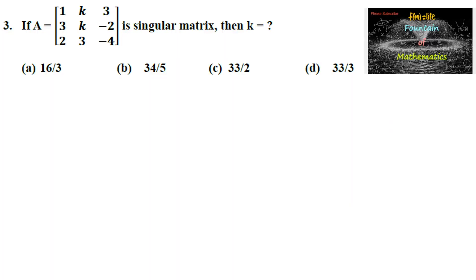If A is a 3 by 3 matrix [1, k, 3; 3, k, -2; 2, 3, -4] is a singular matrix, then k equals? We can say that A is a singular matrix.